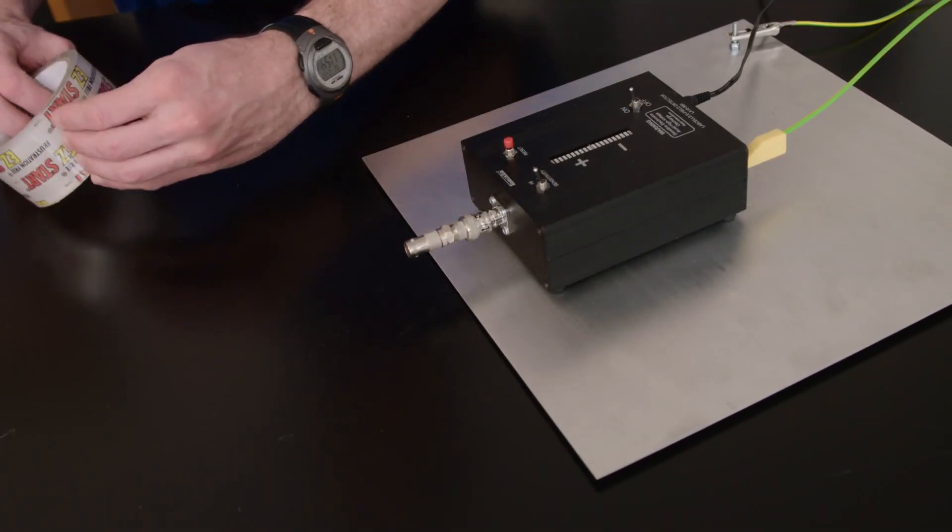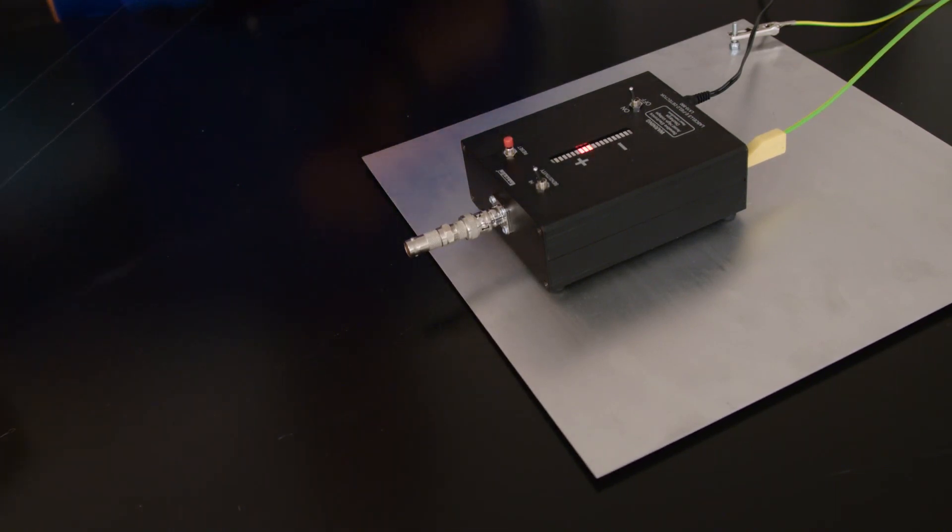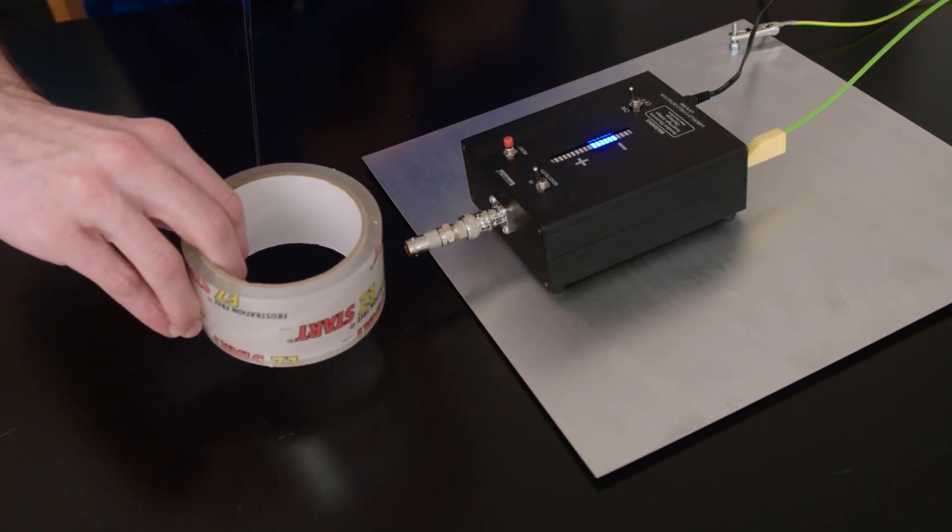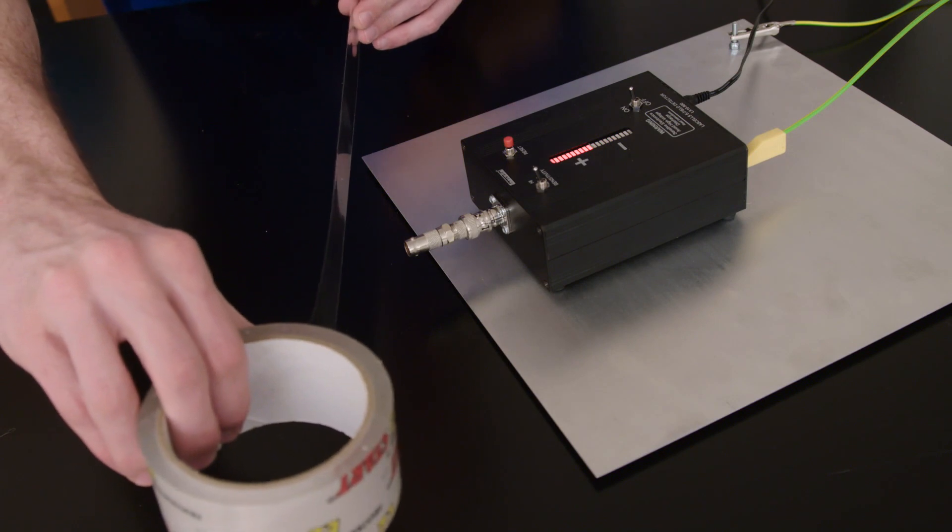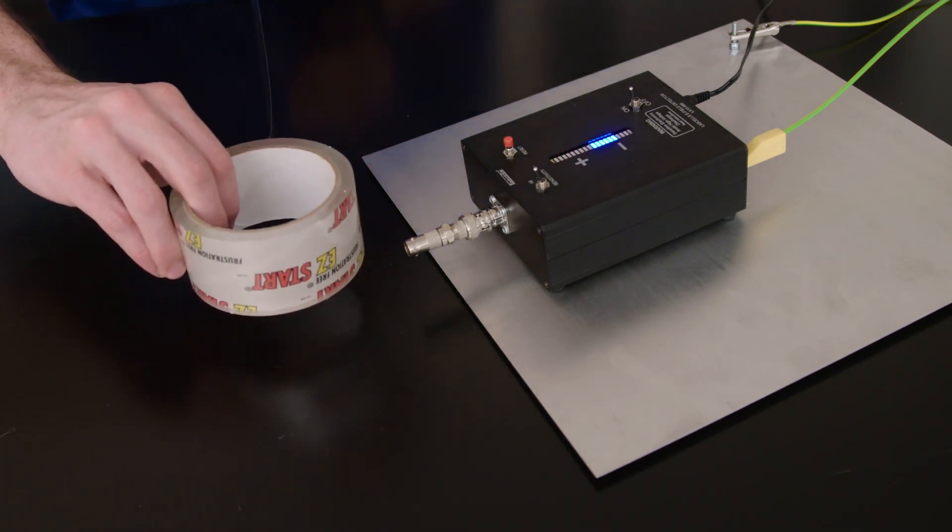For example, when tape is peeled apart, one side is positive and the other negative. This also shows the conservation of charge.